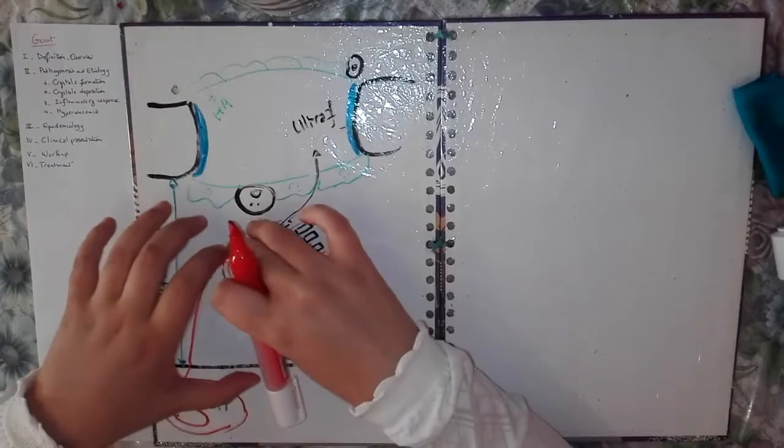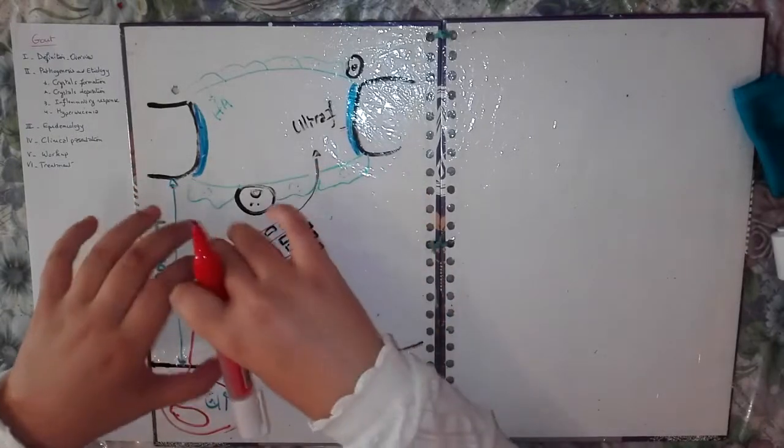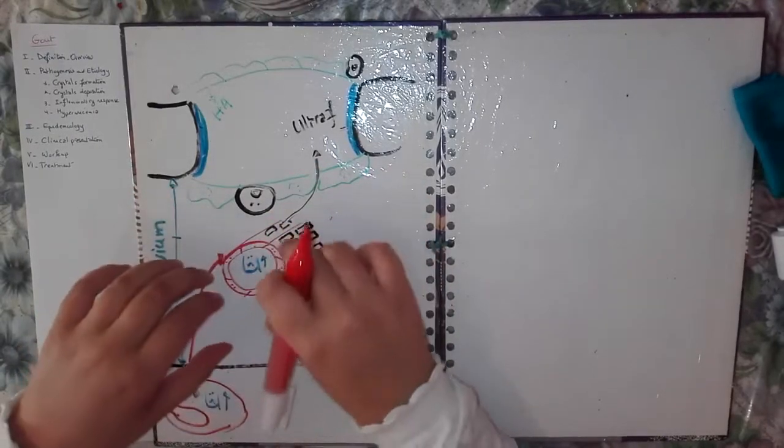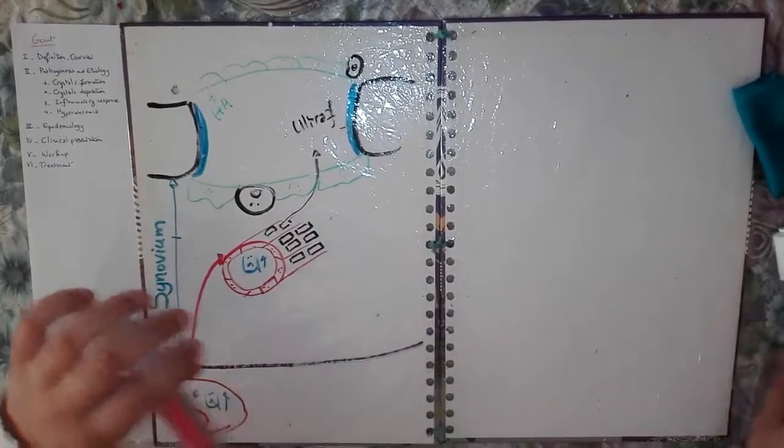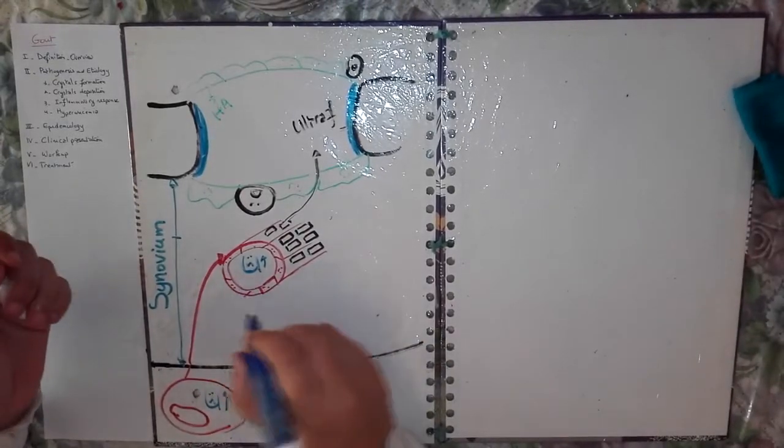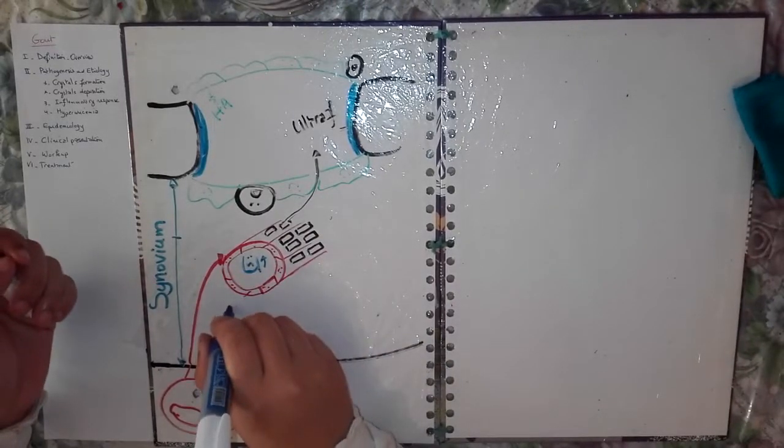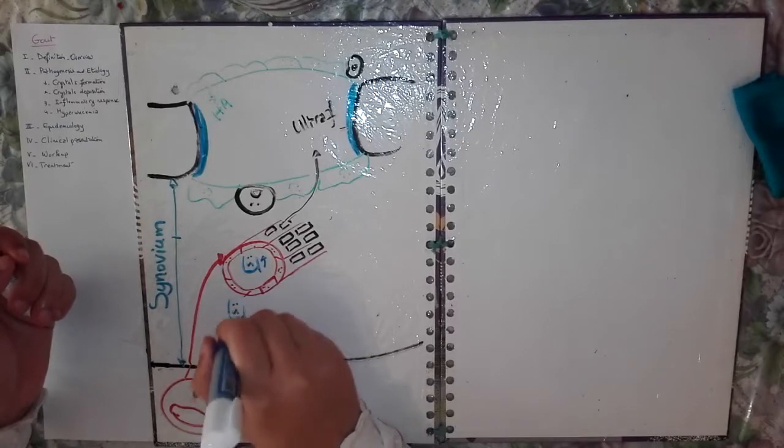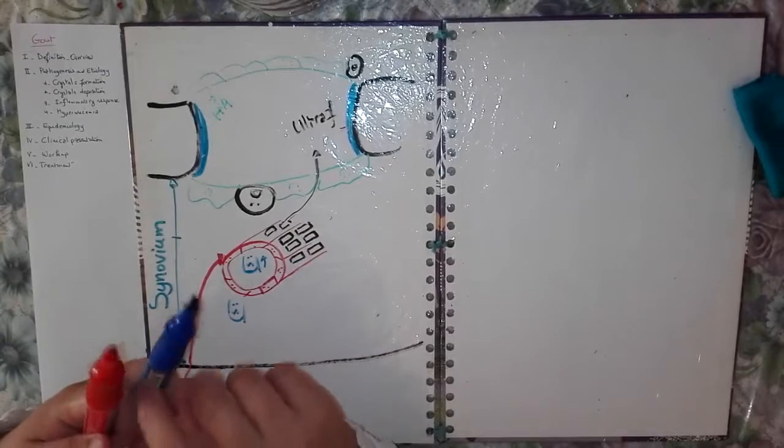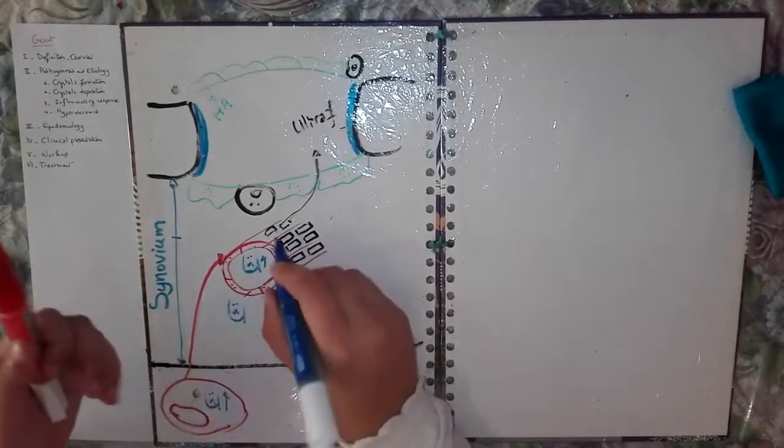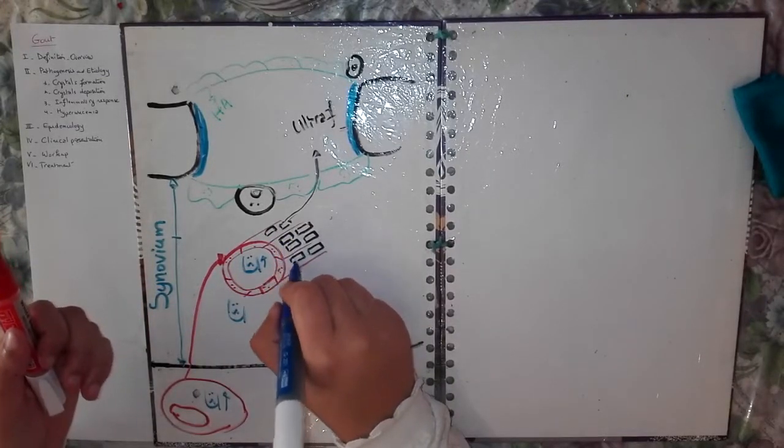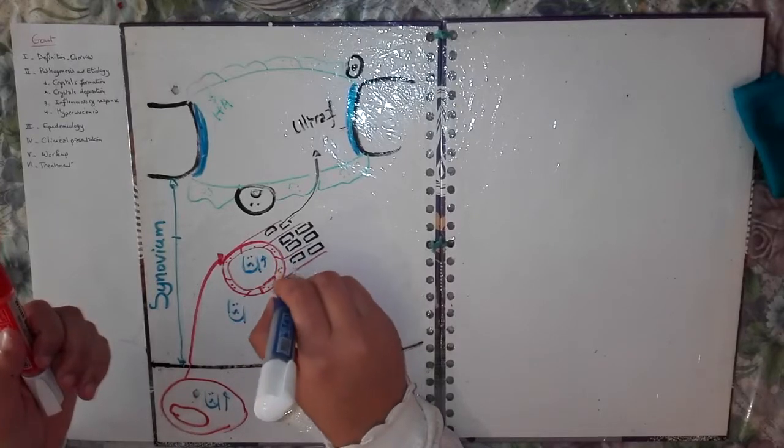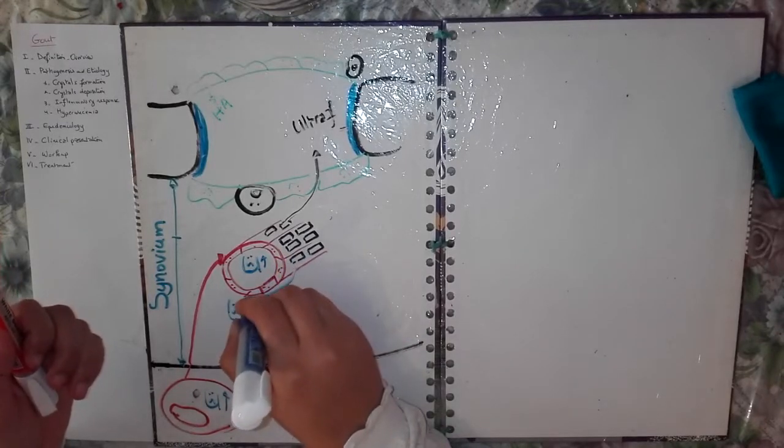Uric acid is going to leak through windows. And comes here within the synovium. Okay, here it is. Uric acid. It came from here, from the windows. It's a functional diagram.